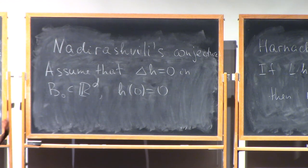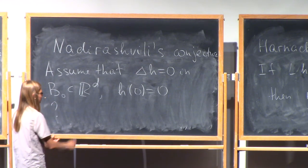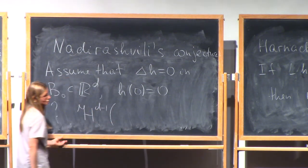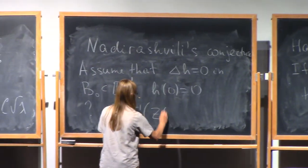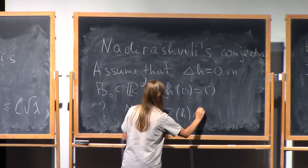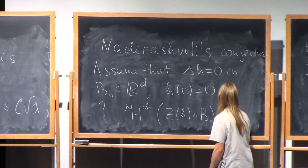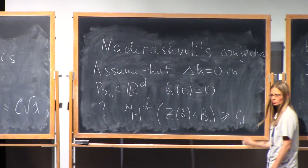Suppose that we have a harmonic function in the unit ball of Rd so that the value of the function at zero is zero. Look at the zero set of this function. And the question was, is it true that the length of the zero set in this ball is bounded from below by some constant that depends on dimension only?